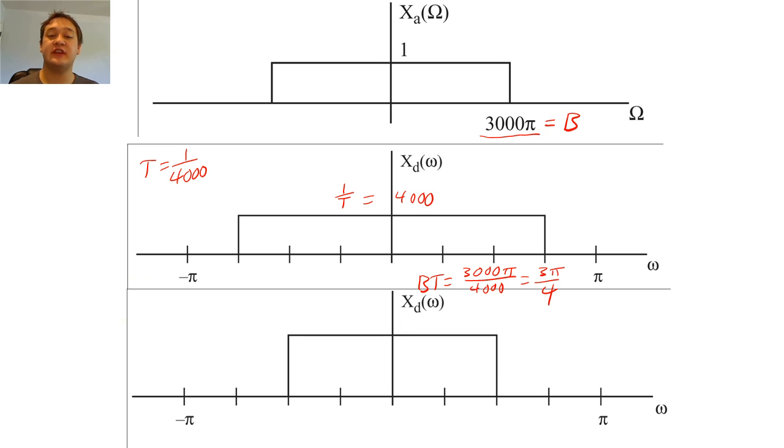If we changed our sampling frequency to 6,000 hertz, the band limit of the digital filter would change to pi over 2, and the height of the filter would scale to 6,000.